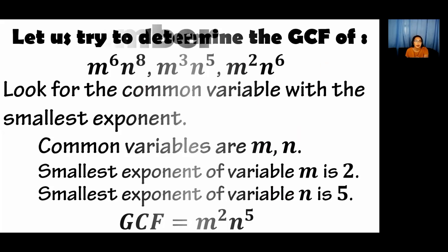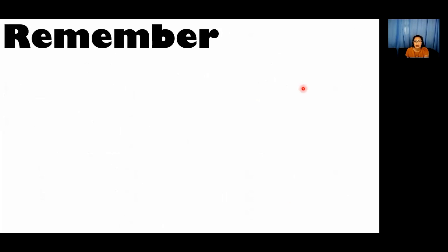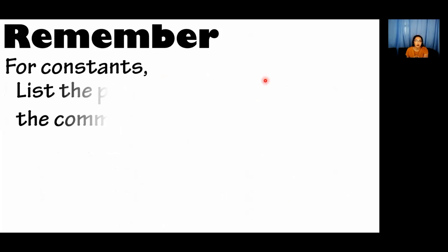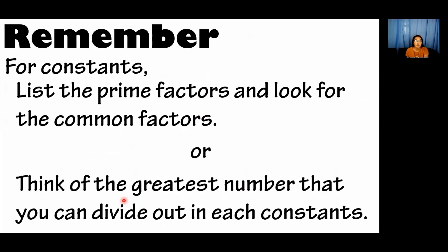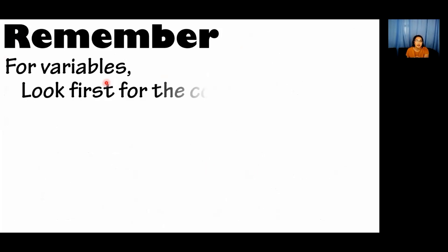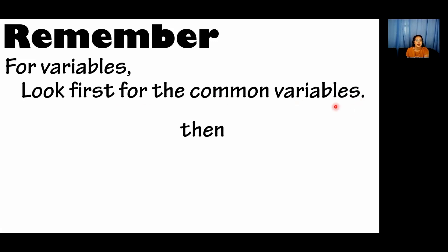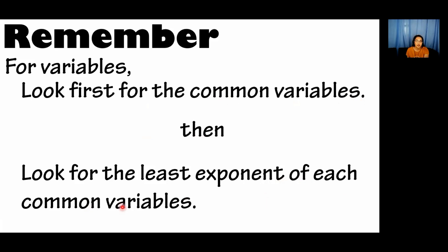So, tandaan: when it comes to determining the GCF of constants, pwede tayong mag-list ng prime factors and look for the common factors, or we think of the greatest number we can divide out of each constant. For variables, ang unang gagawin is to look for the common variables — yung letter na meron sa lahat — and then look for the least exponent of each common variable. Ito ang dapat nating tandaan when it comes to factoring the GCMF.